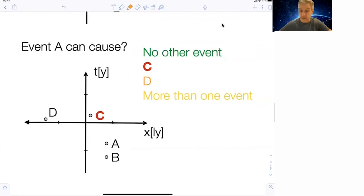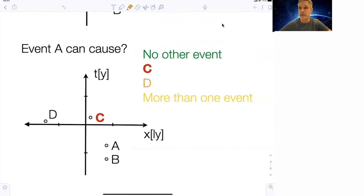The correct answer is C. Only event C can be caused, because only C lies within what we call the light cone of event A. In order to cause an effect on any other event, the message needs to travel at a speed smaller than the speed of light. To reach event C, we can design a spacecraft or send a light beam.